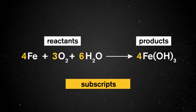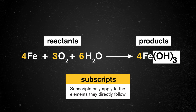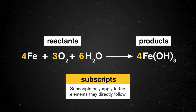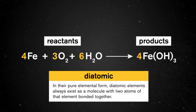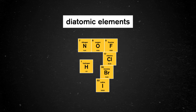Next, there are subscripts in some chemical formulas. Unlike coefficients, subscripts only apply to the element they directly follow. For instance, look at the iron-3-hydroxide on the product side. The hydroxide molecule — the OH — has a subscript of 3, meaning there are 3 oxygen atoms and 3 hydrogen atoms each. This, when multiplied by the overarching coefficient of 4, becomes 12 oxygen atoms and 12 hydrogen atoms total. Subscripts can tell us more than just quantities: in the case of oxygen on the reactant side, the subscript 2 also denotes that oxygen is diatomic, so one oxygen molecule has two oxygen atoms. In their pure elemental form, diatomic elements always exist as a molecule with two atoms bonded together. There are 7 of these in the periodic table: hydrogen, oxygen, nitrogen, bromine, fluorine, chlorine, and iodine.